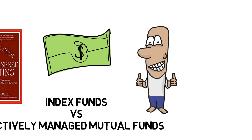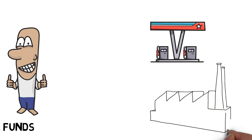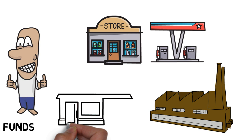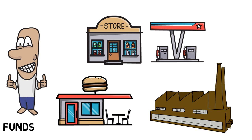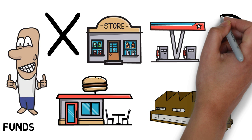Simply put, the winning strategy is to own all the nation's publicly held businesses at very low costs. By doing so, you are guaranteed to capture almost the entire return that they generate in the form of dividends and earnings growth. Trying to beat the market is a loser's game, according to John Bogle. So why are index funds so much better than actively managed mutual funds, and why did John Bogle base his entire career on them?